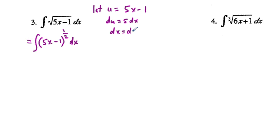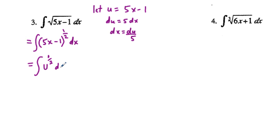Dividing both sides by 5, we have dx equals du over 5. Now we can make our substitutions. Instead of (5x minus 1) we write u, so we have u to the one-half power, and we replace dx with du over 5.